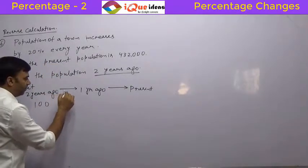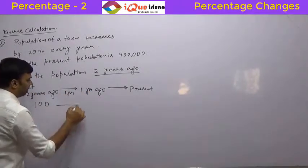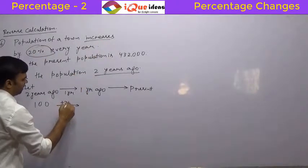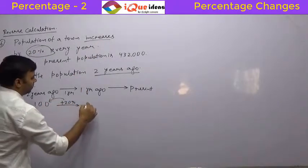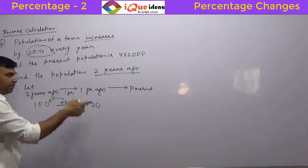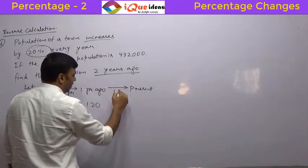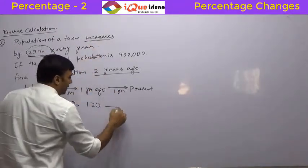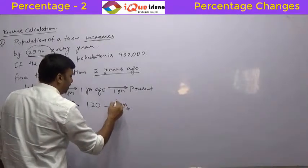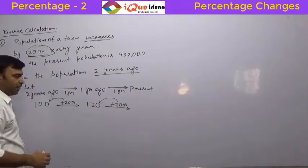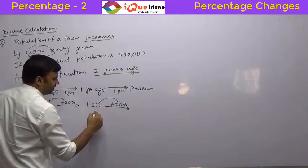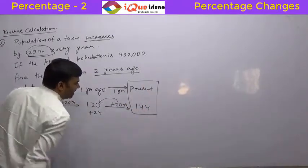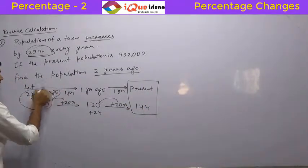From 2 years ago to 1 year ago is a period of 1 year. The value increases by 20 percent, calculated on 100, so it becomes 120. The population 1 year ago is 120. From 1 year ago to present is also 1 year, and in every period it increases by 20 percent, compounded. So 20 percent of 120 is 24, added to 120 gives 144. The present population is 144 when the population 2 years ago was 100.